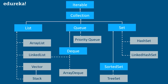In this figure, blue boxes refer to the different interfaces and the gray color rectangles define classes. Here, List is an interface and ArrayList, LinkedList, and Vector — all these classes implement the List interface. Similarly, Deque is also an interface, so it extends and inherits the Queue interface.